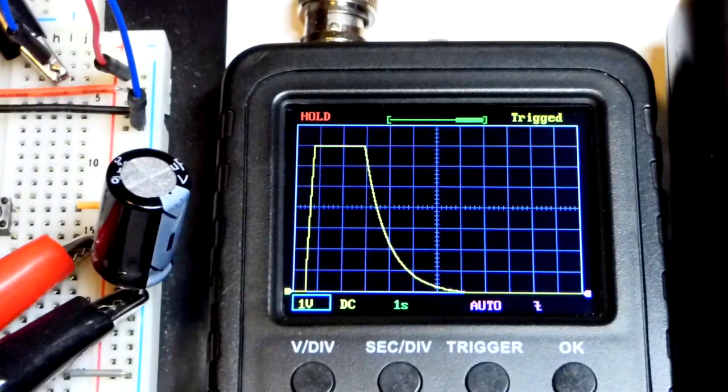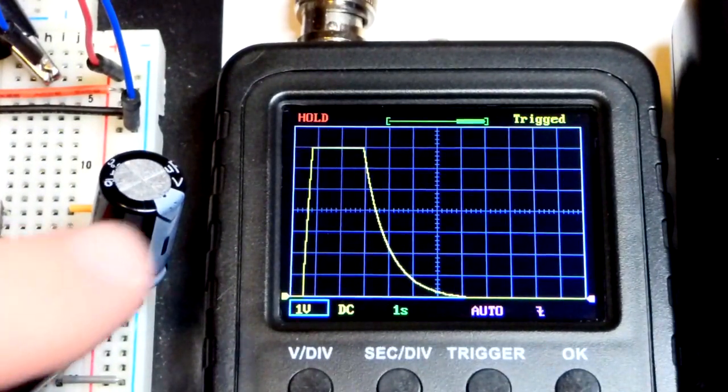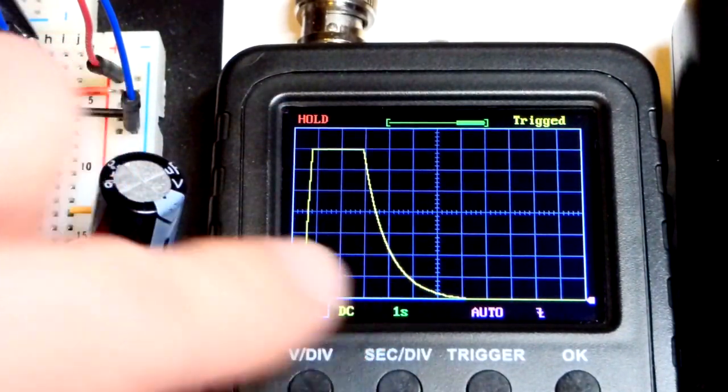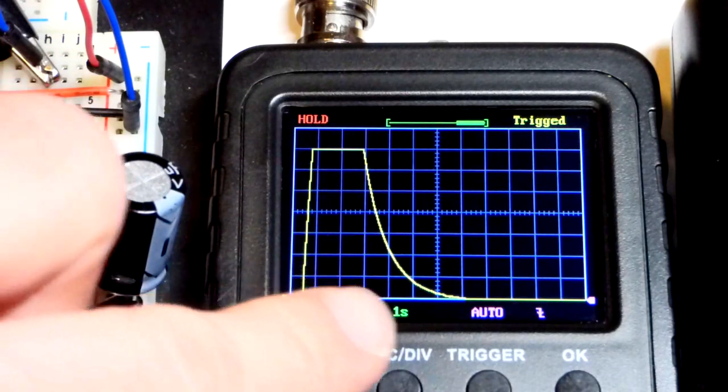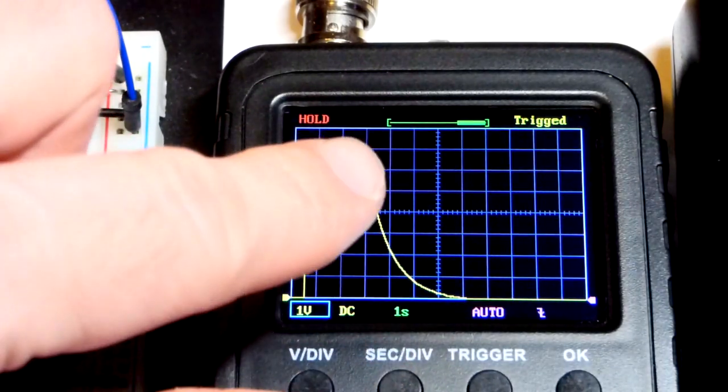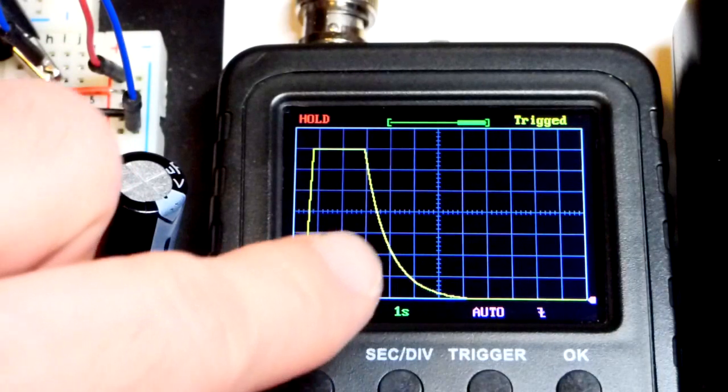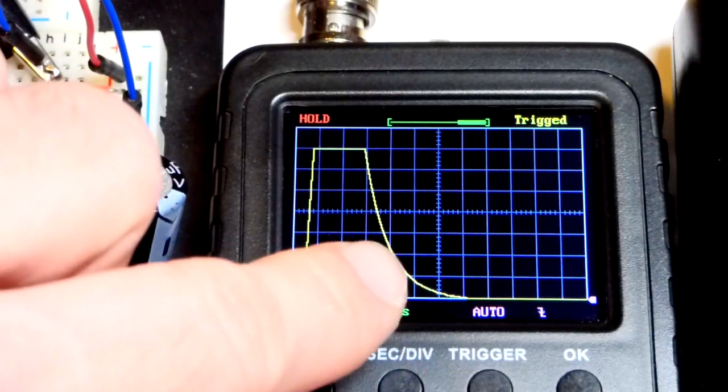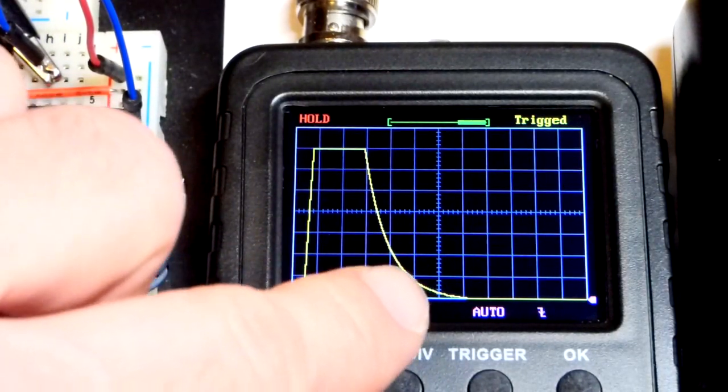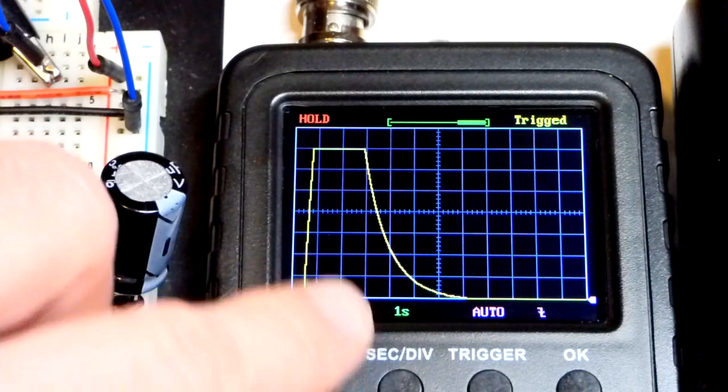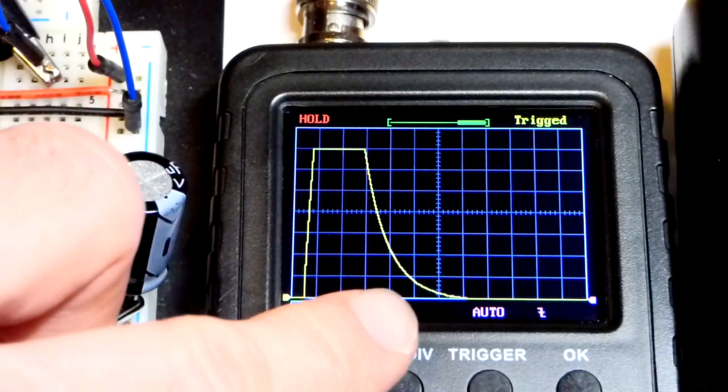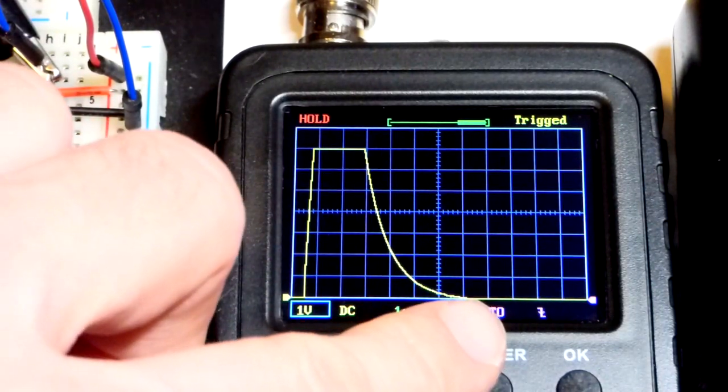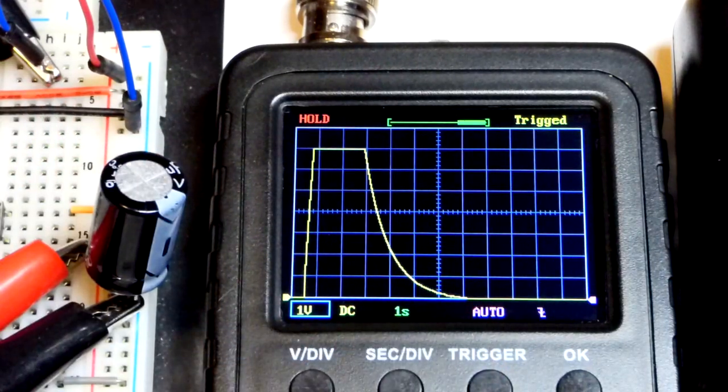So we already talked about that it quickly goes down. And there's one time constant. So it went down about two thirds of the voltage over a second. And then the next second, it went about two thirds where it was before. And so we are here, we can go one, two, three, four, five, you can see about that point, it's completely discharged right there.